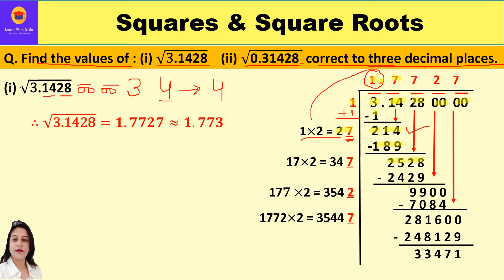Bring down the next period 28; new dividend is 2528. The current quotient is 17, so the new divisor base is 17×2=34 (or 27+7=34). After trials, 7 is suitable: 347×7=2429 ≤ 2528. Remainder: 2528−2429=99.